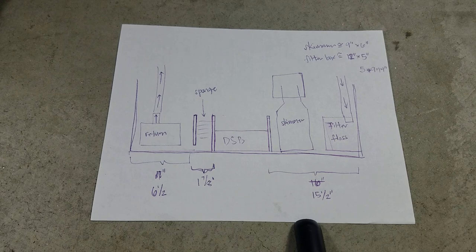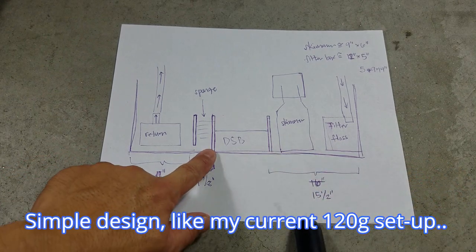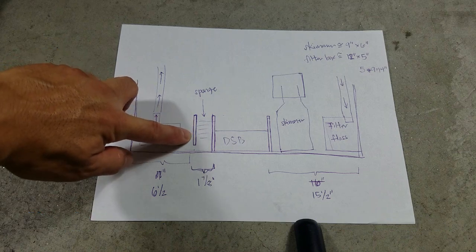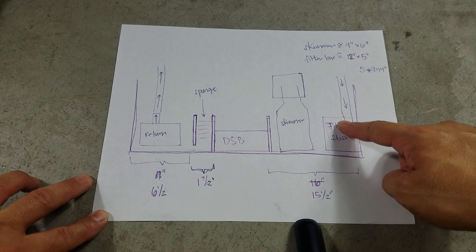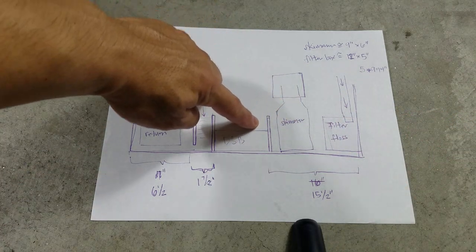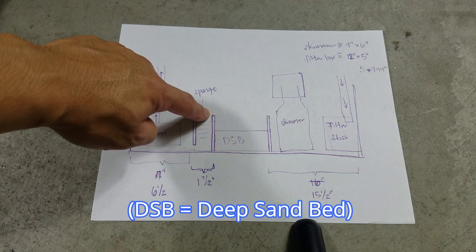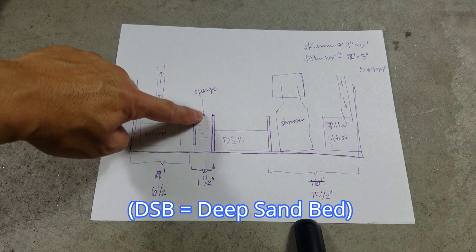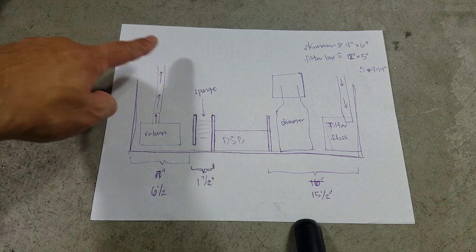Alright so the game plan here is I'm going to have these three baffles - one there, one there and one here like a floating one. Water is going to come down into this acrylic box that's going to have filter floss. This is also where the skimmer is going to be. Water is going to flow over this baffle into this DSB compartment then flow up again over this baffle, down through this filter sponge here, under this baffle and go back into the tank via the return.